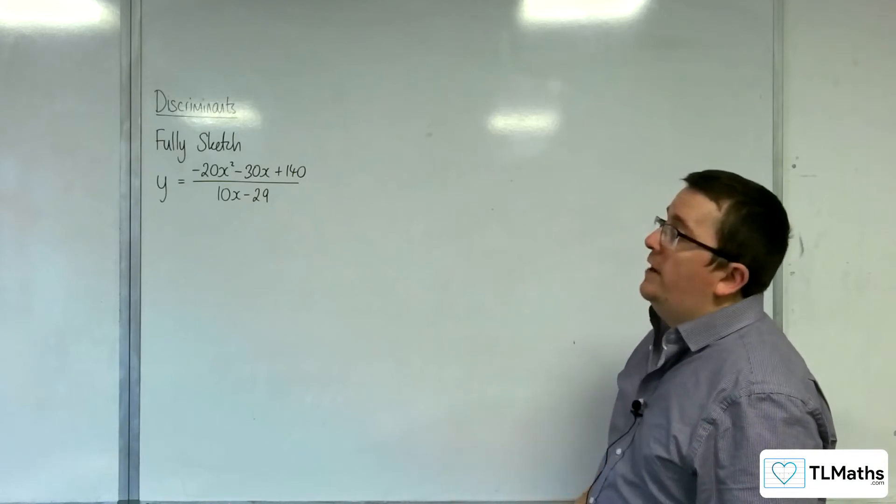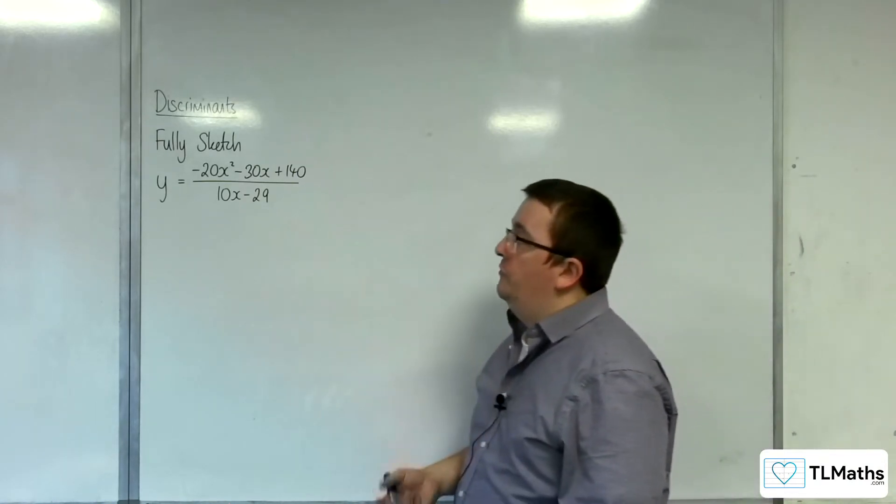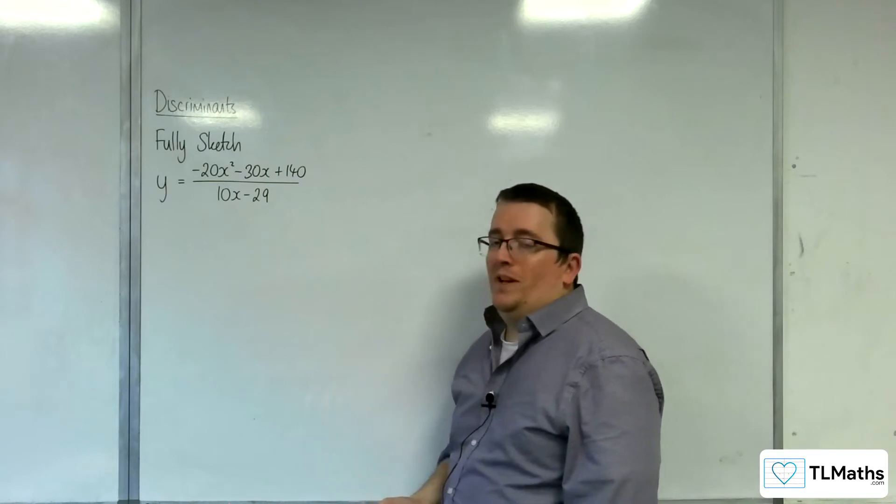In this video, I'm going to fully sketch y equals minus 20x squared, take away 30x, plus 140, over 10x, take away 29.